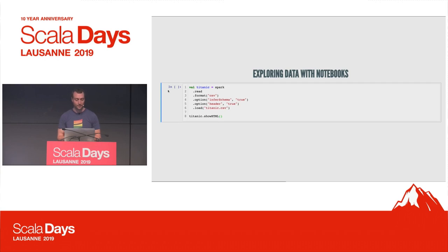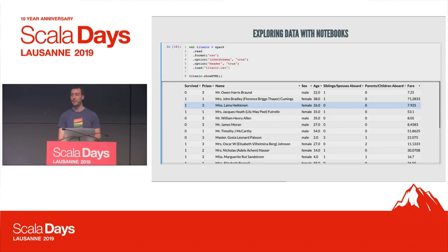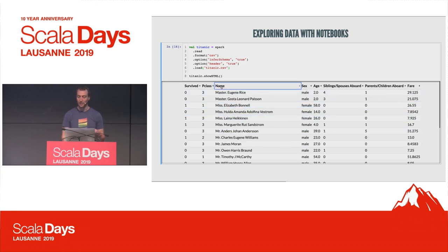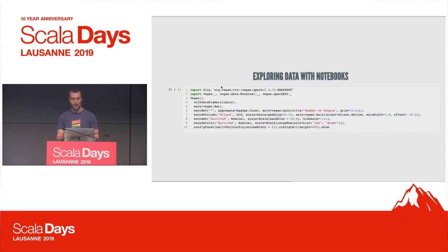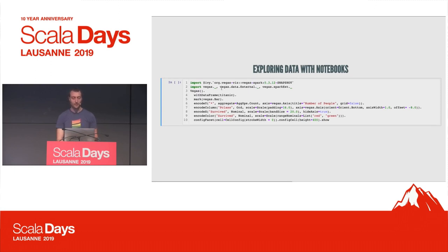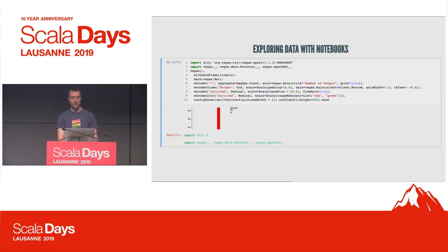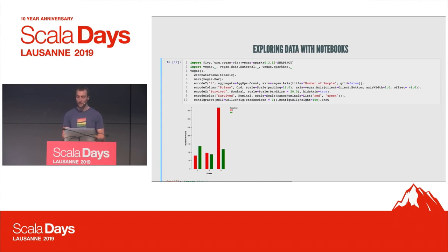With notebooks, on the other hand, we can do a little bit better. Let's stay with the Titanic dataset and run this. Now we have a nice HTML representation of our data — a nice table — and we can even sort things. I'd argue this is much better to read. And the same for visualization — we also have an integration for the Vegas library, and we can just run it. And here we go — we have our plot embedded in the notebook with our code, and we can share these things together.